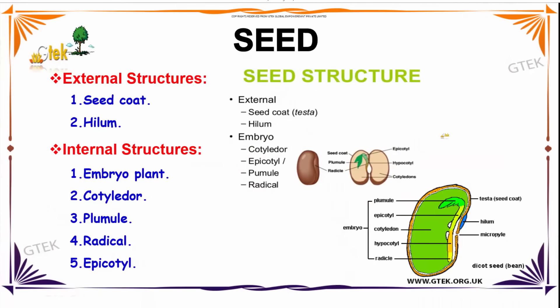Now we are going to see about seed. Seed has two structures: External and Internal. In External it has Seed Coat and Hilum. Whereas the Internal has Embryo plant, Cotyledon, Plumule, Radicle, and Epicotyl.